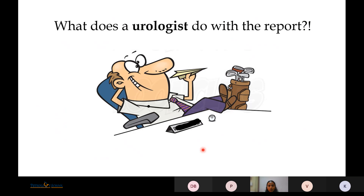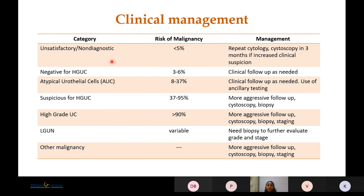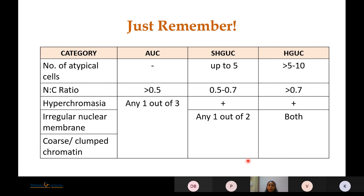Regarding clinical management: for unsatisfactory, negative, or atypical urothelial cell reports, the risk of malignancy is lower and management is clinical follow-up as needed based on patient history, with ancillary techniques available to the urologist. As the category increases, more aggressive follow-up is needed, including biopsy and cystoscopic examination. It is important to remember that the number of atypical cells in high-grade urothelial carcinoma is 5 to 10; if fewer than 5, the specimen is placed in the suspicious category.